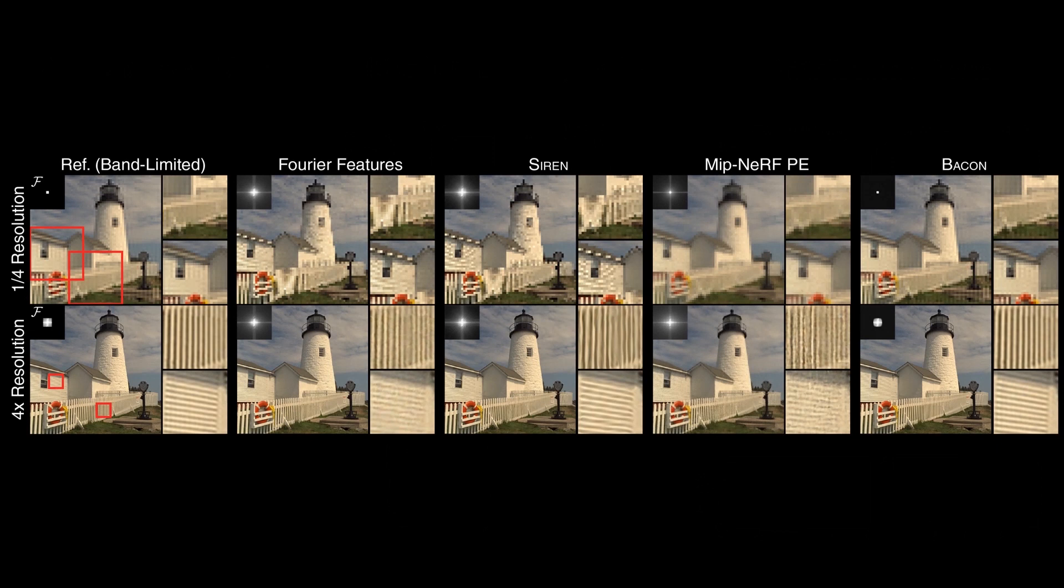We train BACON to represent this image of a lighthouse. To produce a low-resolution output using SIREN or Fourier features, we can sample the network on a coarse grid, but this results in aliasing, since these networks are not scale-aware.